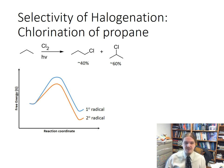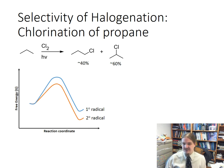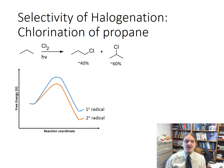You might remember from general chemistry that there's not a strong correlation between kinetics and thermodynamics — the more spontaneous the reaction does not automatically mean that it's faster. But there is something called the Hammond postulate that suggests that for very similar reactions, the more exothermic one might be the faster one. We're going to talk about the Hammond postulate as it relates to this reaction in a few slides.